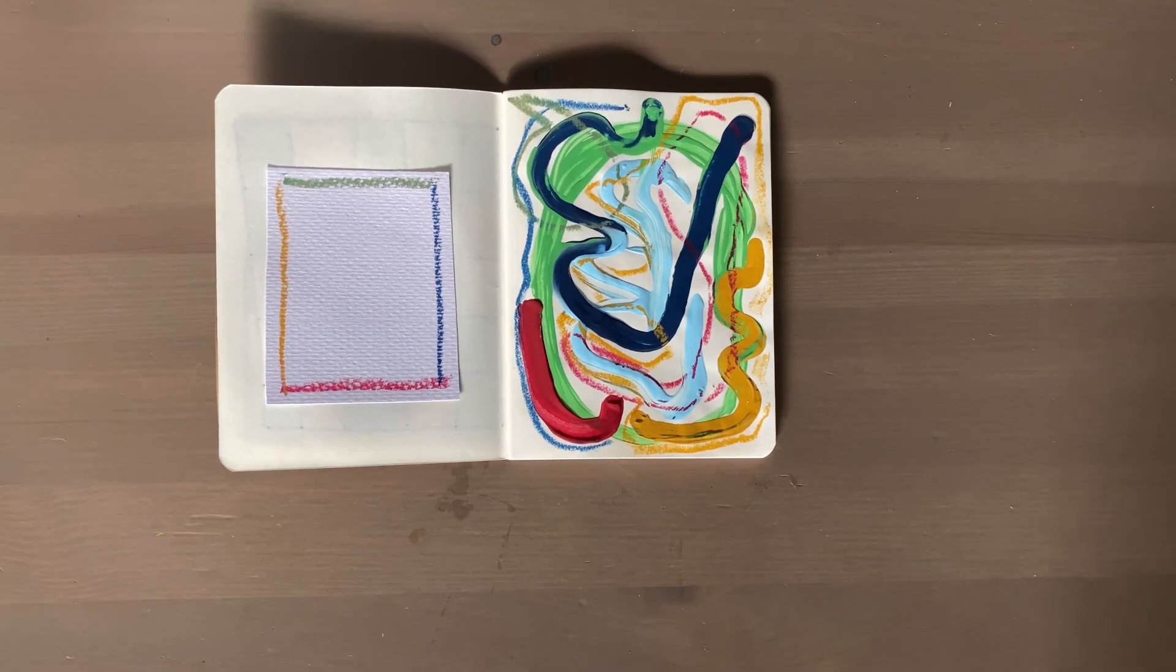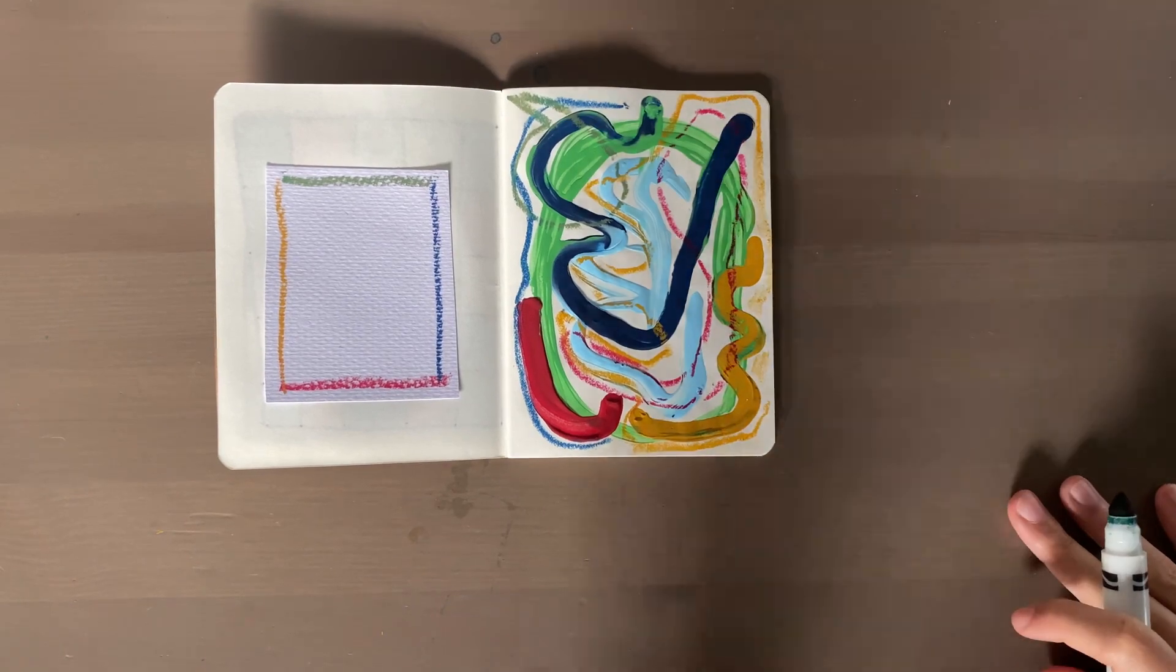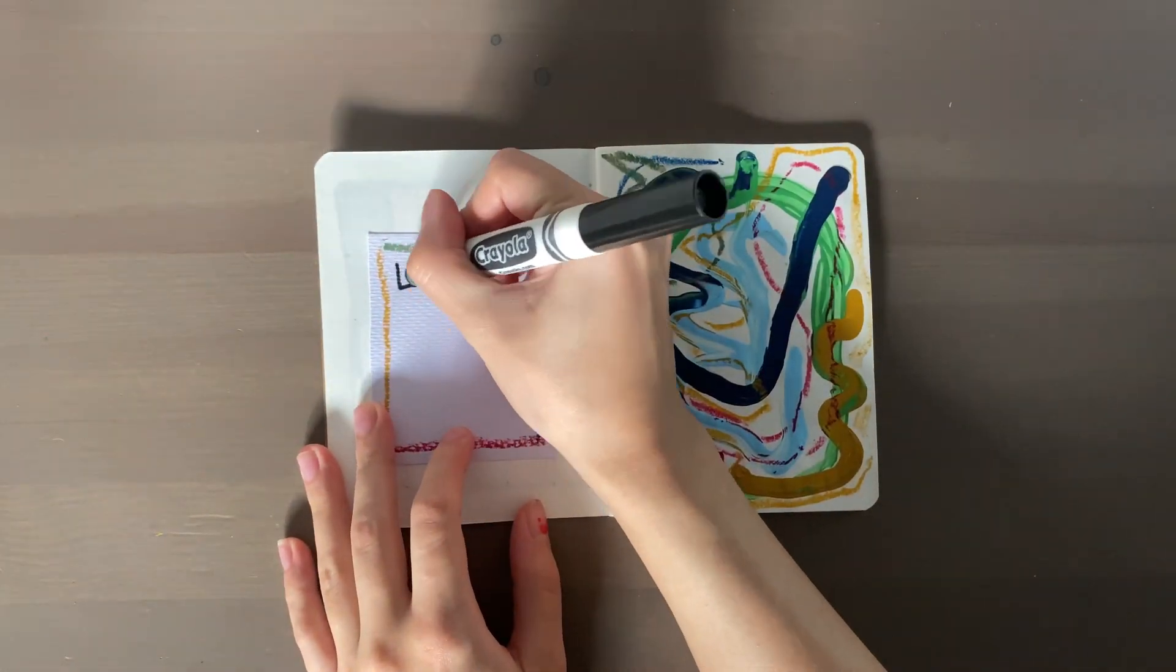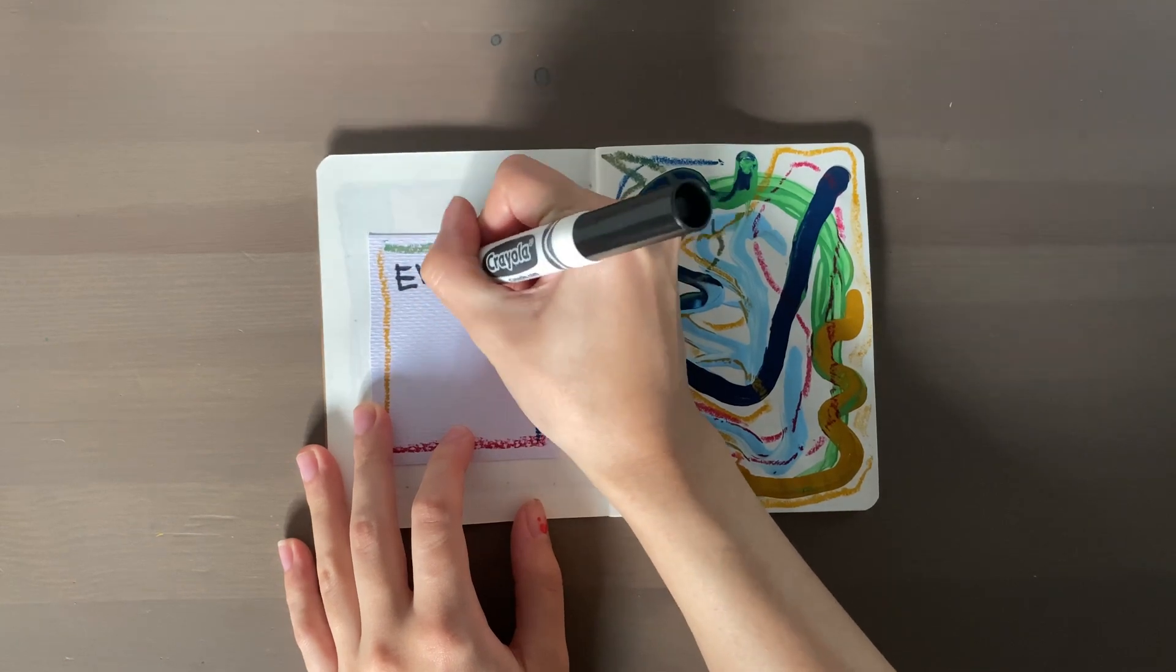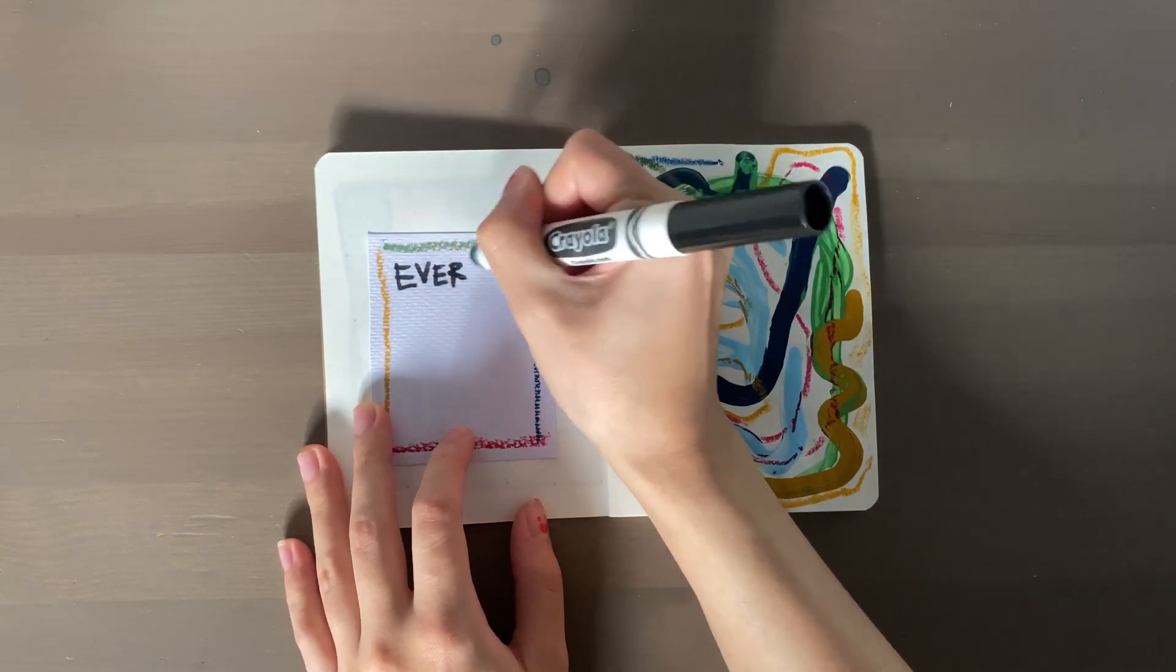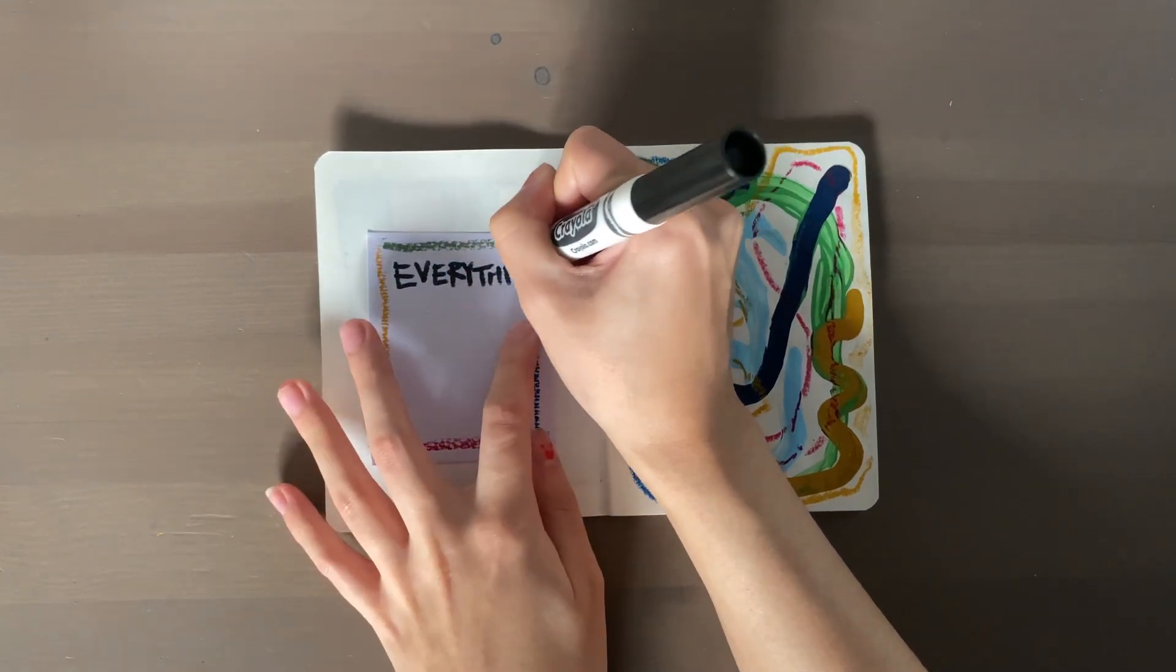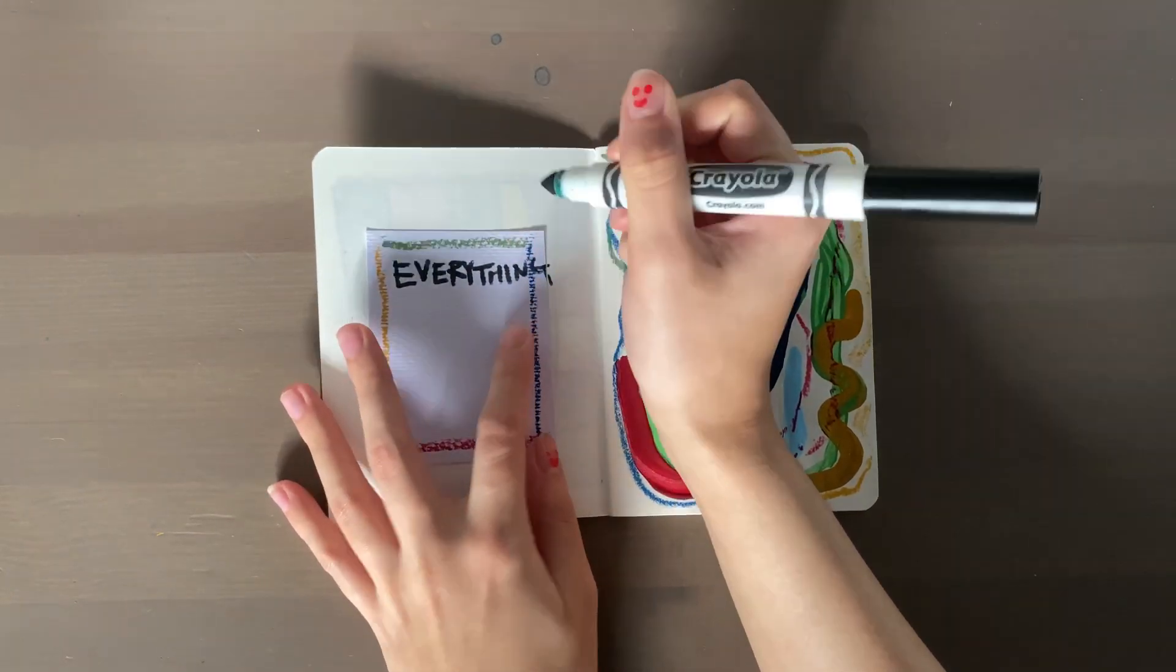But trust me when I say that to get to those good pages that I like, I've had to make double the amount, maybe even triple the amount of pages that I've absolutely hated. That's why I do journals like my daily art journal, because if I do make a page that's not my favorite, it's okay. I can just turn the page and the next day I'll try something new.